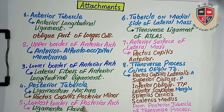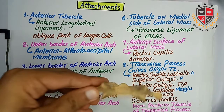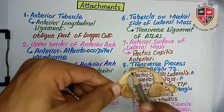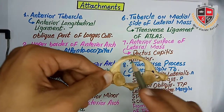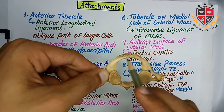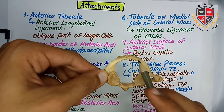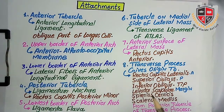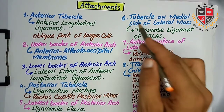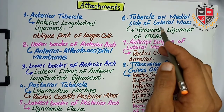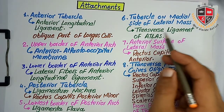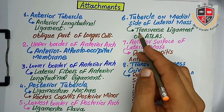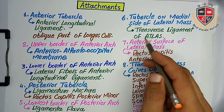The lower border of the posterior arch gives attachment to the ligamentum nuchae and rectus capitis posterior ligament. The tubercle on the medial side of the lateral mass gives attachment to the transverse ligament of the atlas.